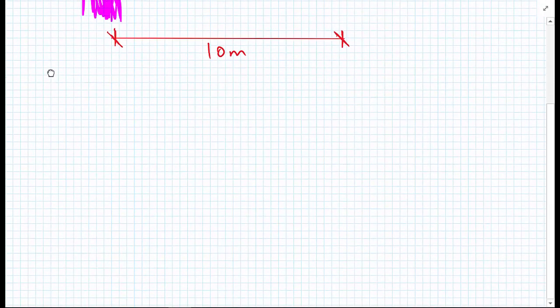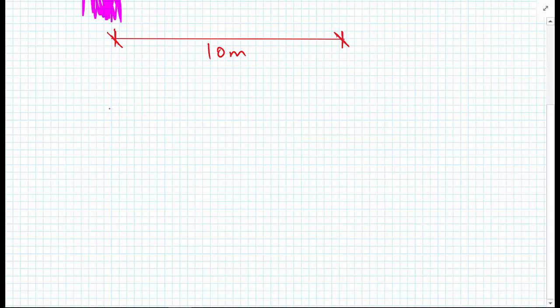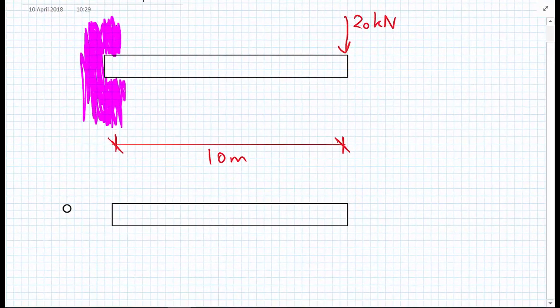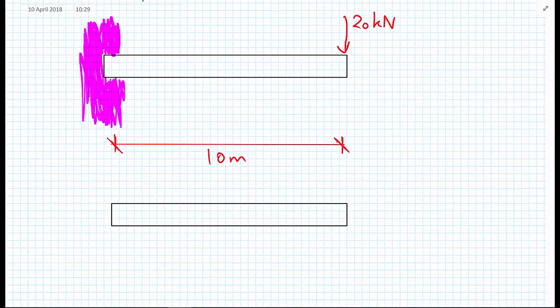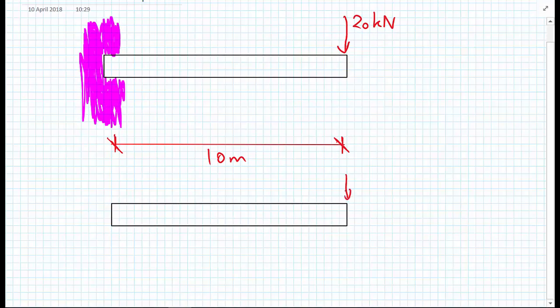So we'll draw the beam again and now we're going to add on all of the forces that this beam would be experiencing. We have the 20 kilonewtons at the tip, that's okay.